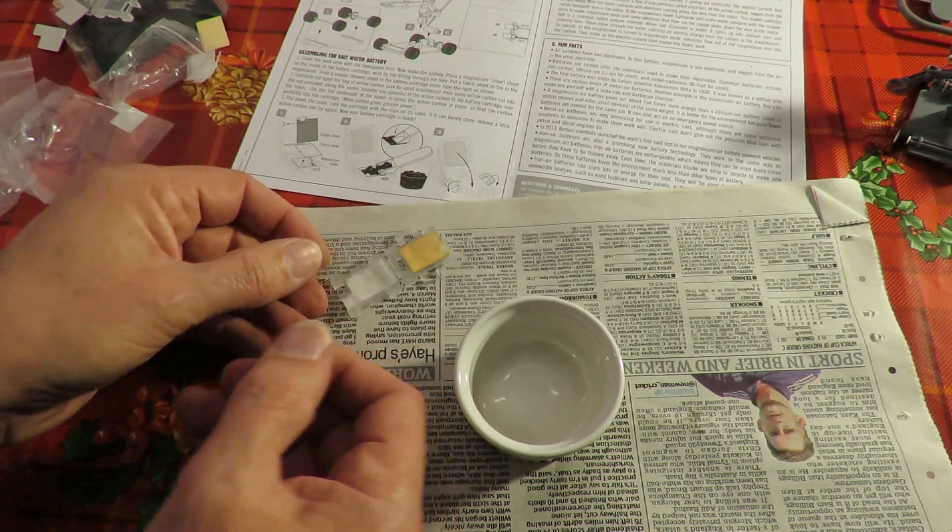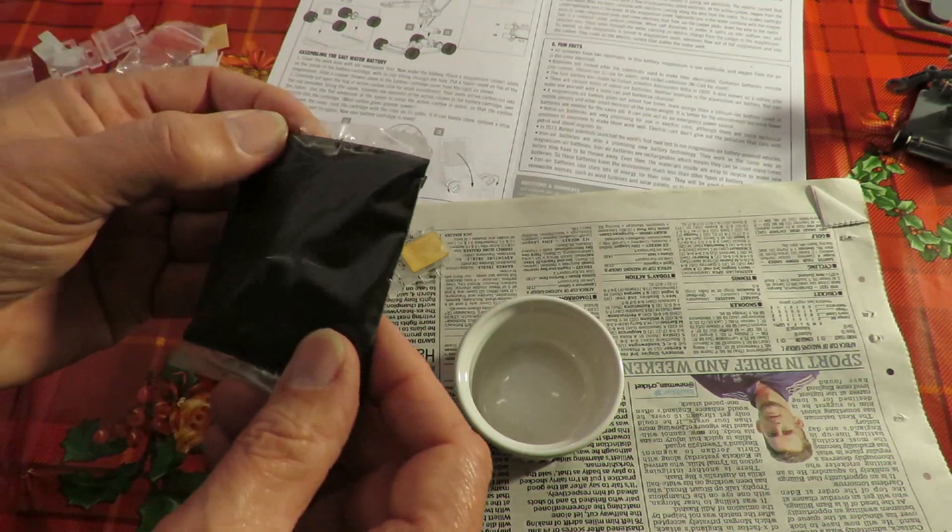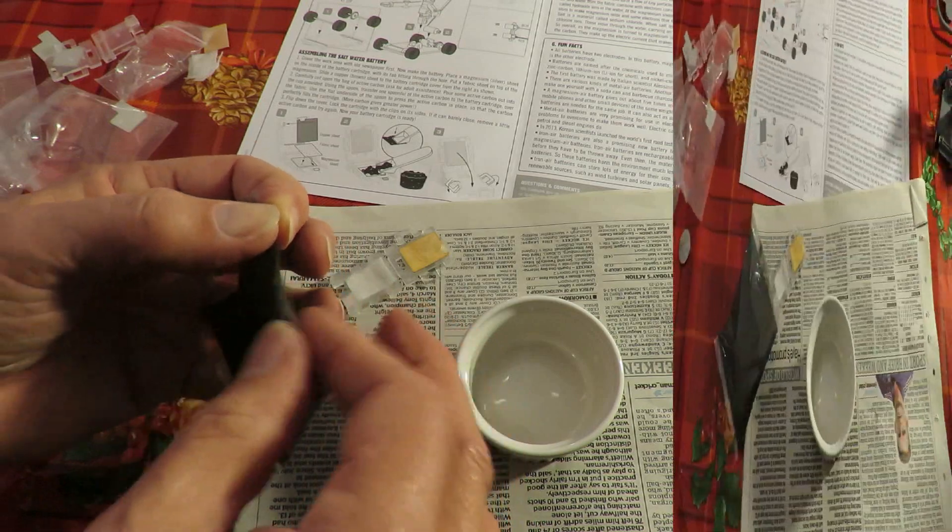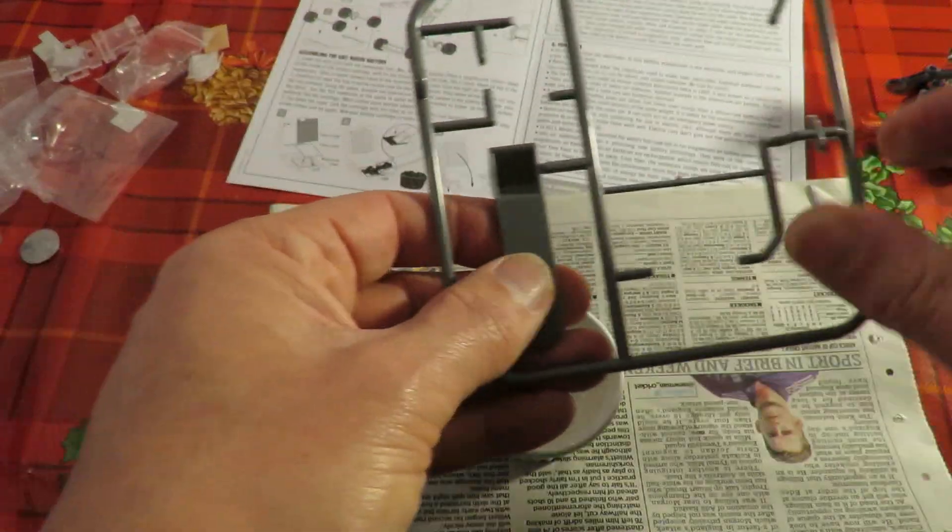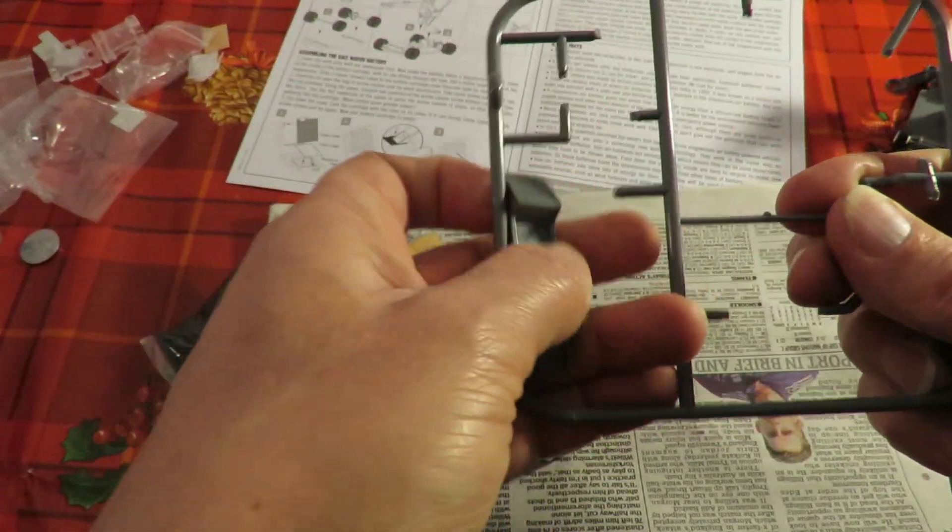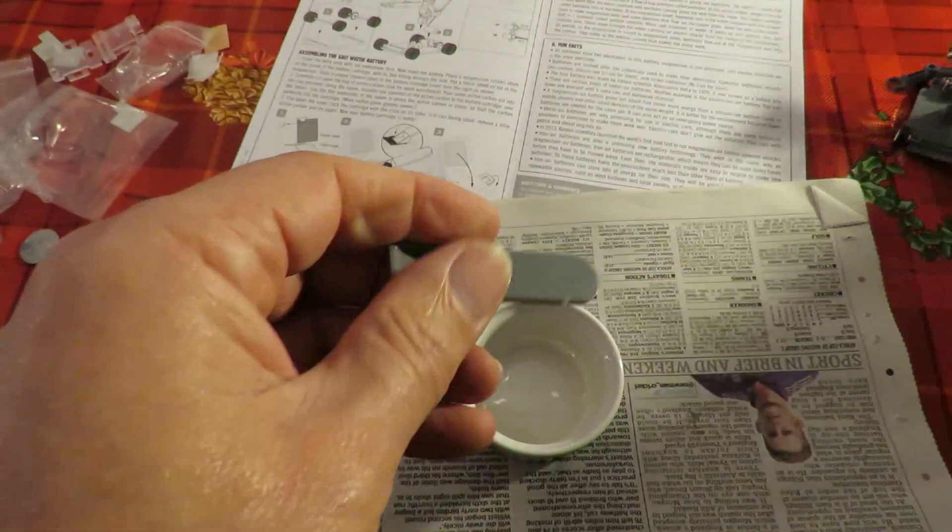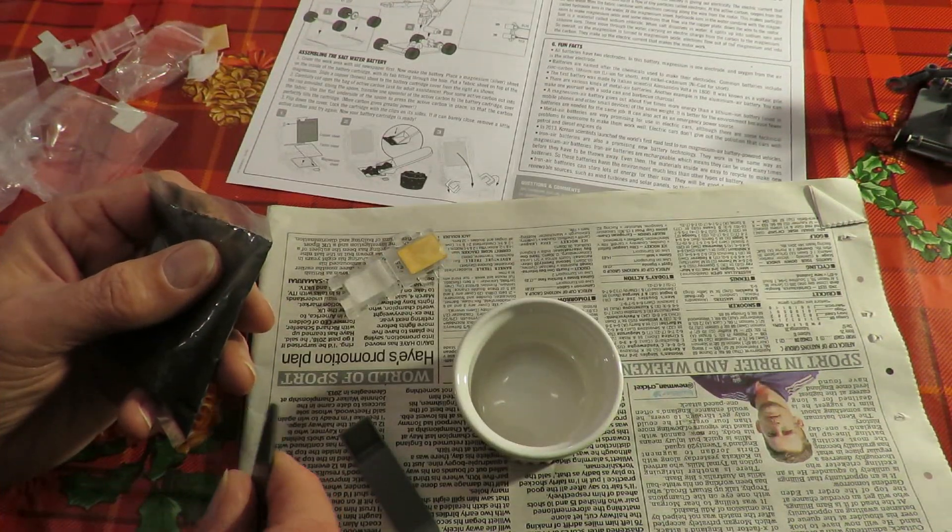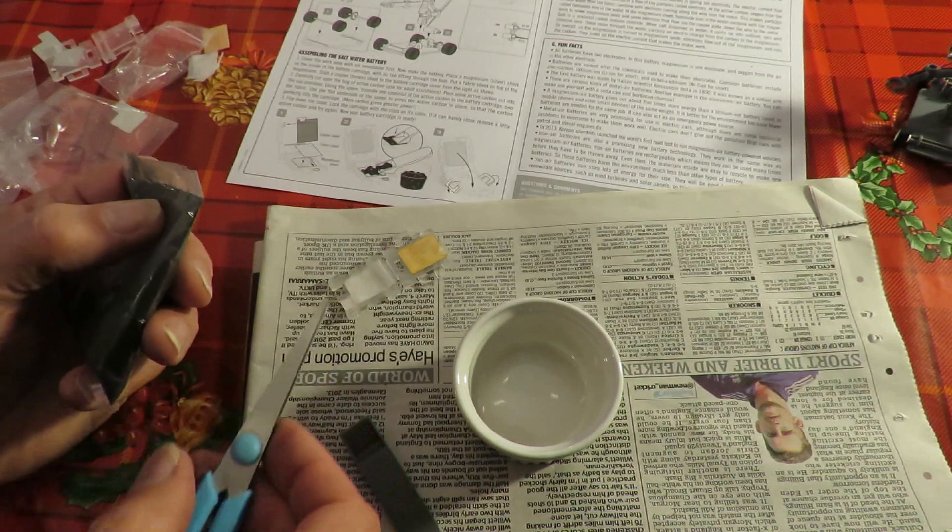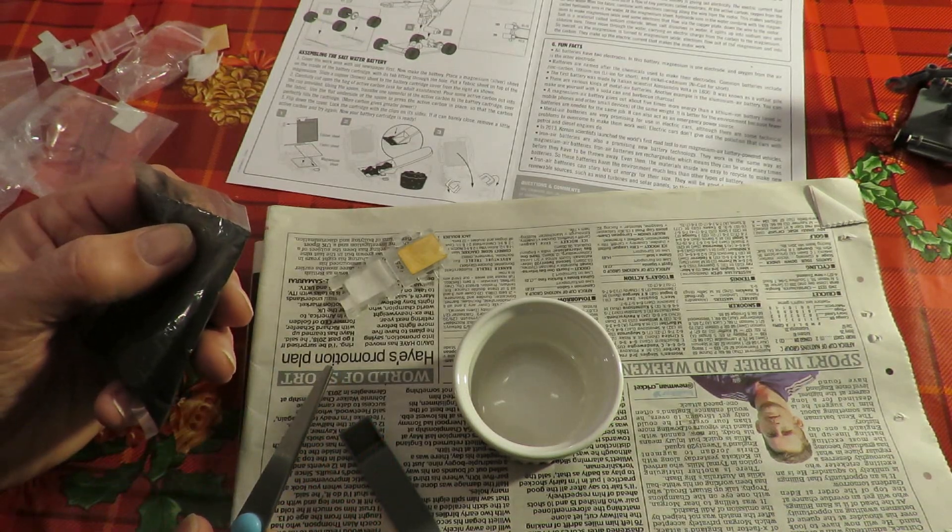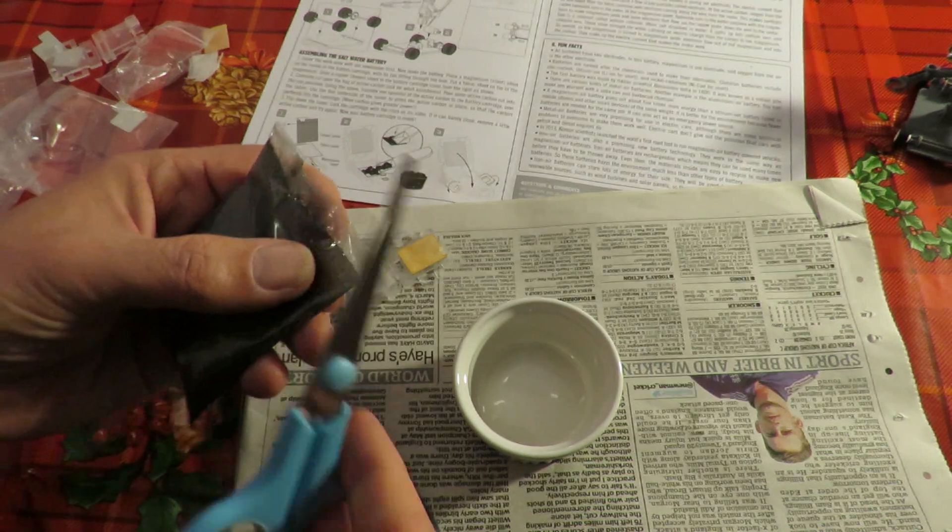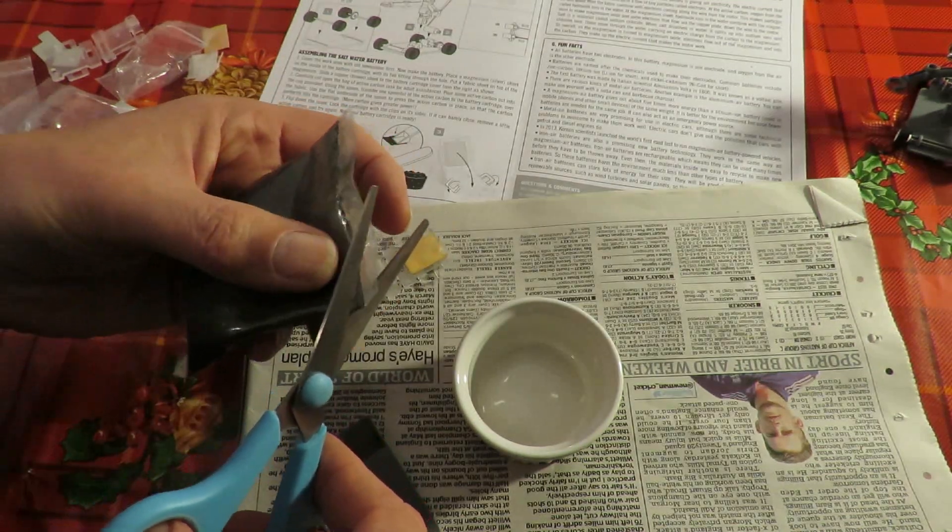Carefully cut open the bag of active carbon. Yeah, this is going to be messy. Okay. We need that bit as well. We want one spoonful of active carbon to go into the battery cartridge. Hmm. Okay. Let's see if we can do this. This way.